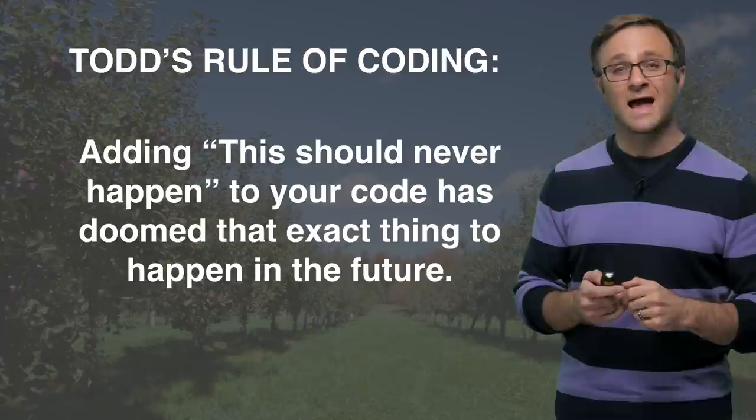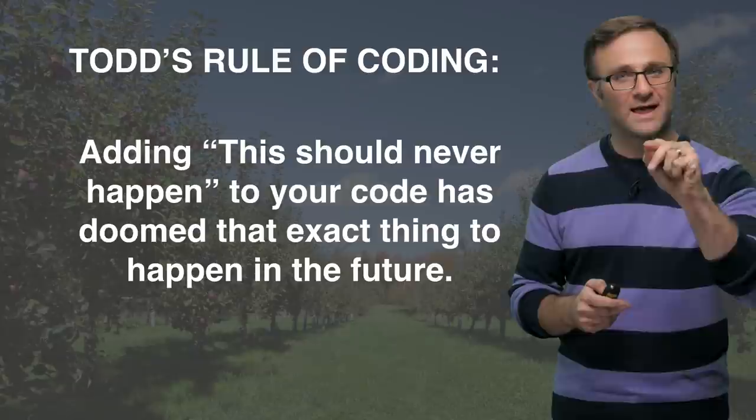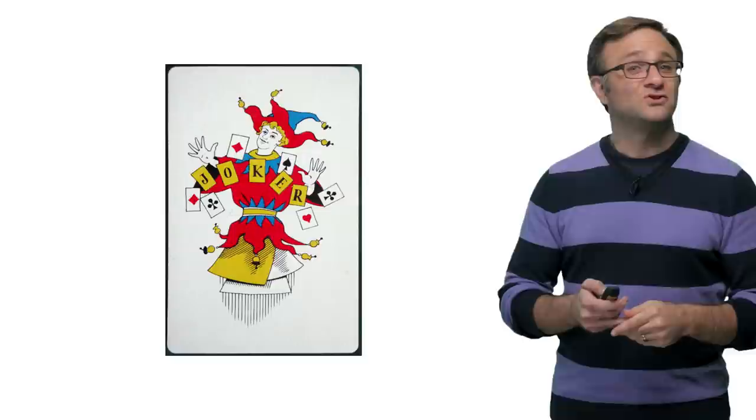Well, anybody who has worked in software knows that simply adding the comment, this should never happen, to your code magically ensures that at some point in the future, that exact thing will happen. So let's go back to our card game. And our lead designer suddenly decides we need to have jokers in our game.